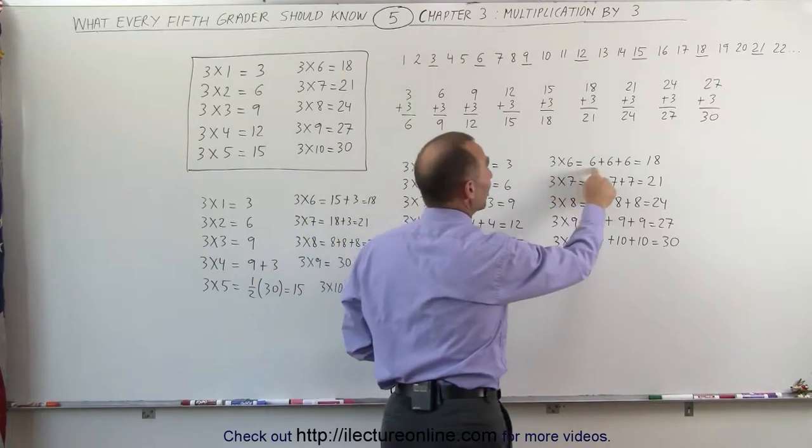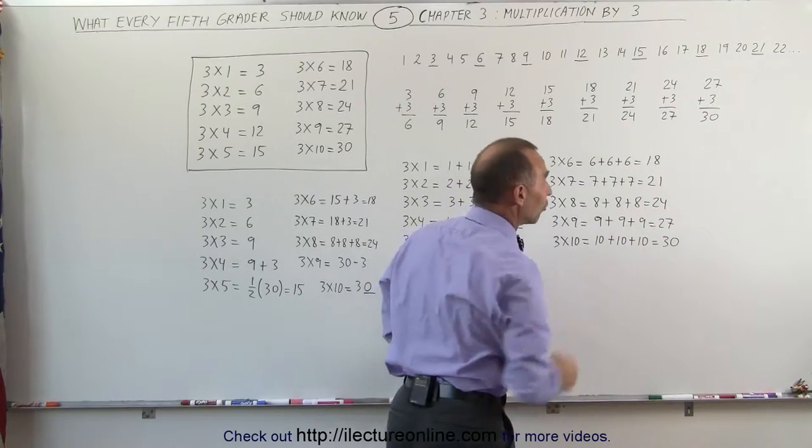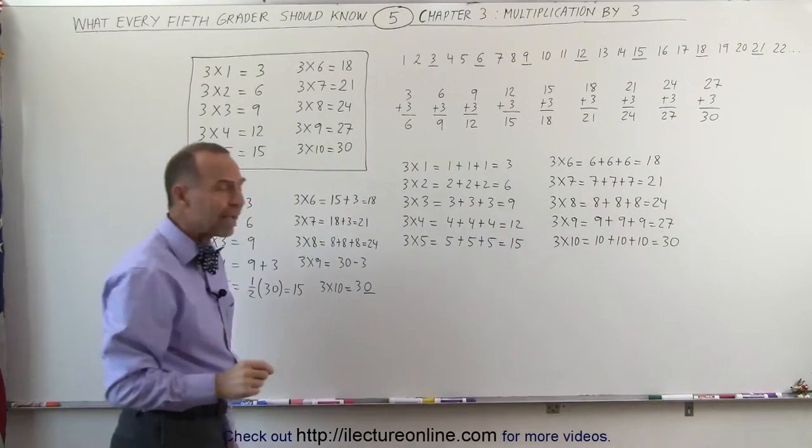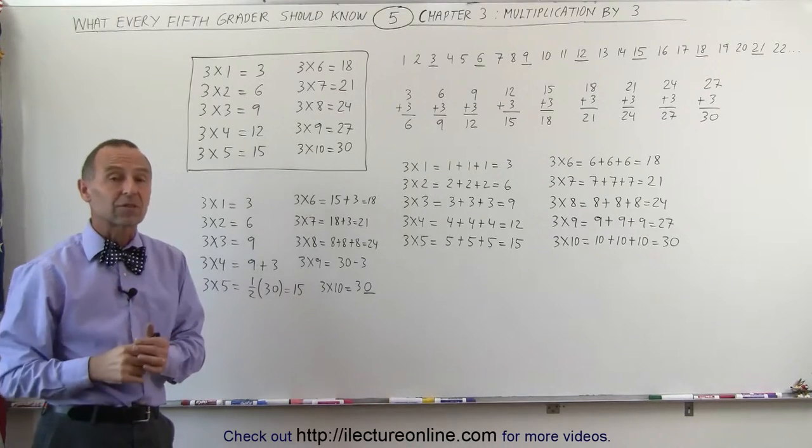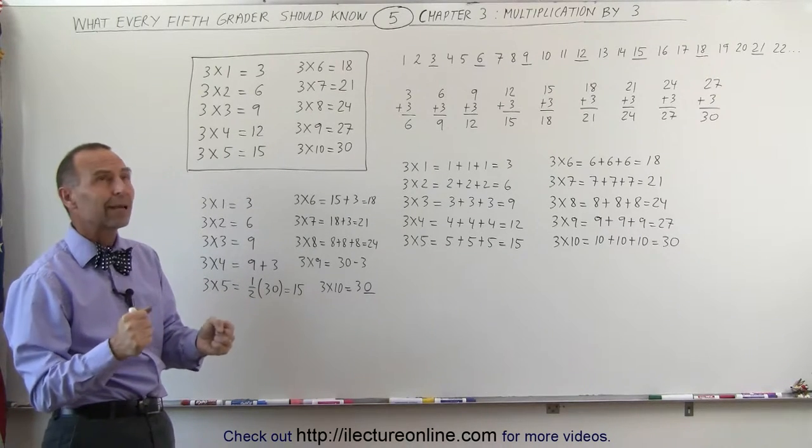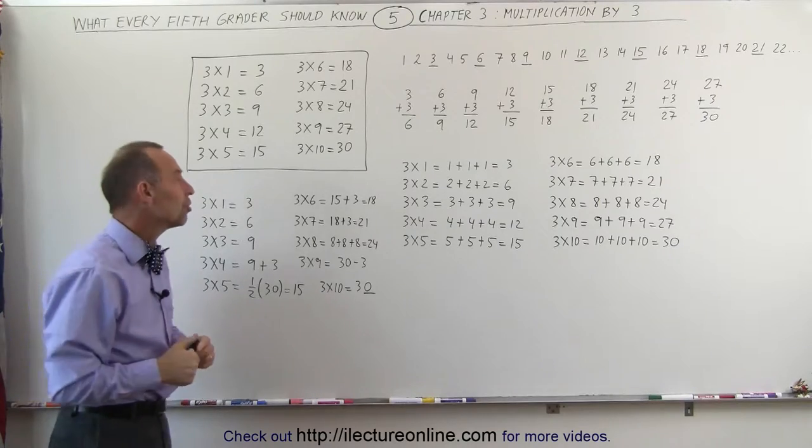Again, 3 times 6, you have 3 sixes. Add them together, you get 18, and so forth. Sometimes we need little tricks, because if someone says, what is 3 times 6? You sit there and go, oh, I can't remember. But then there's some tricks to use. For example,